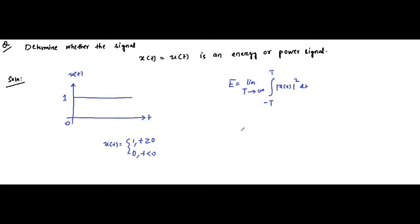So this energy expression becomes limit T tends to infinity of integral from 0 to T of 1 dt. Why? Because for negative time, that is minus T to 0 (minus infinity to 0), the unit step signal is 0. So we only integrate from 0 to infinity, which corresponds to limit T tends to infinity of 0 to T.